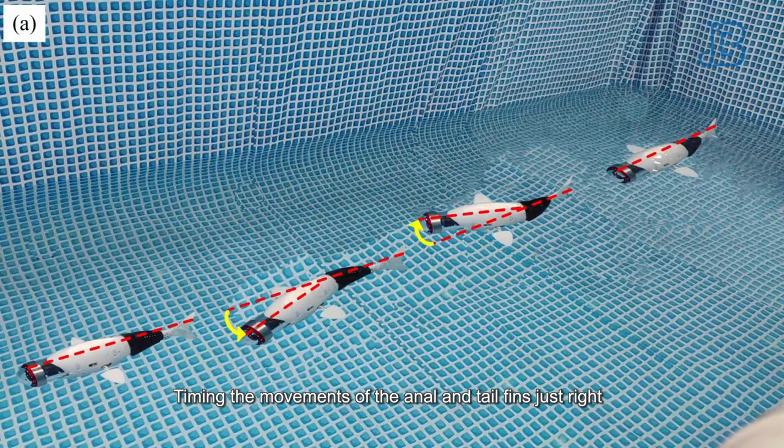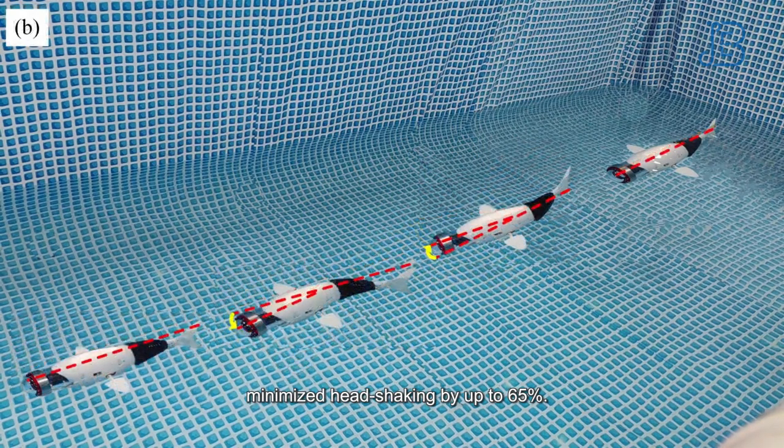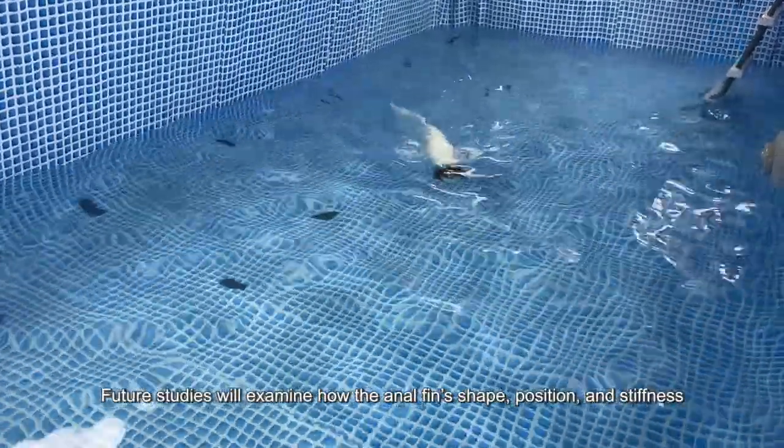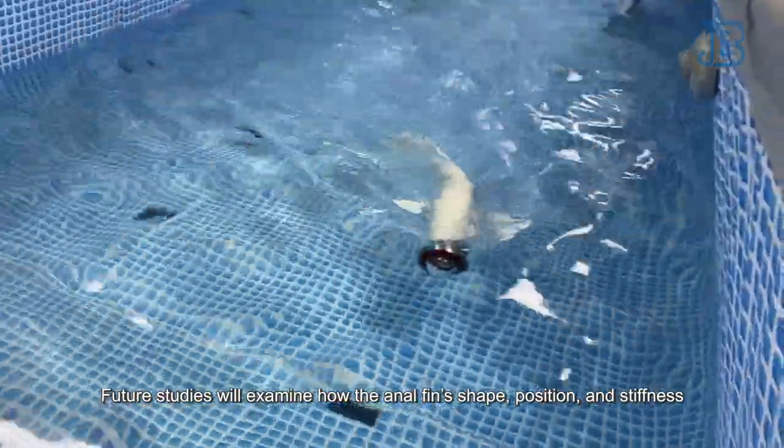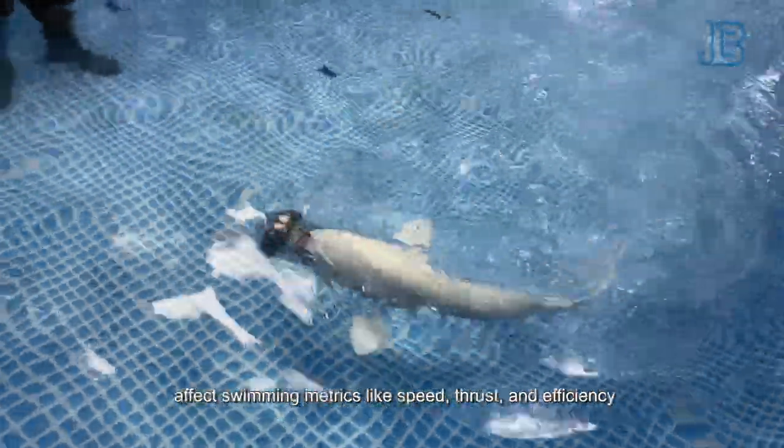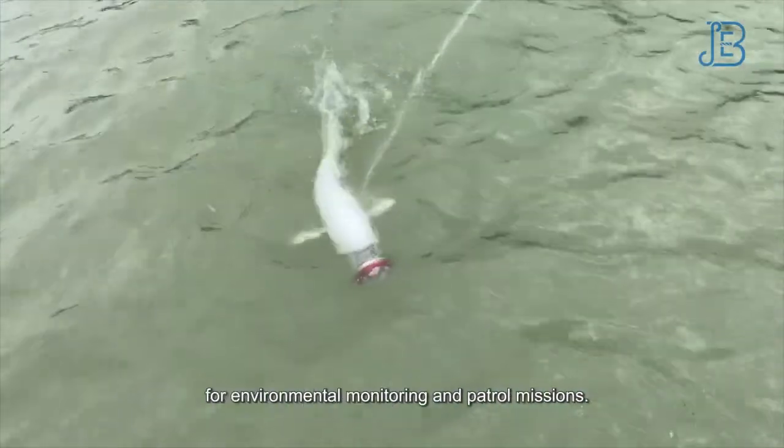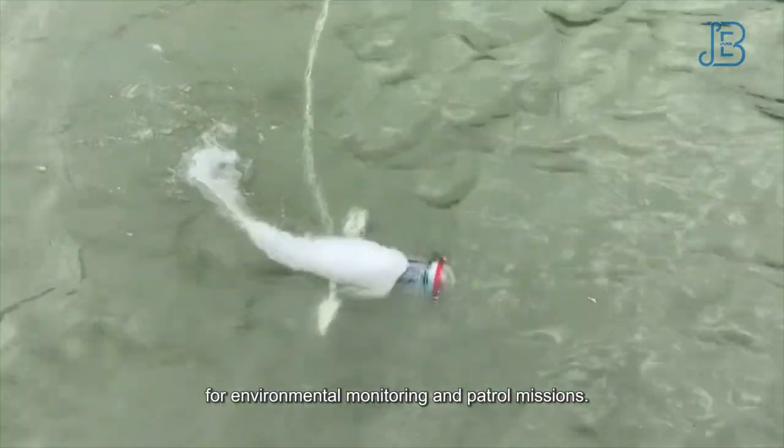Timing the movements of the anal and tail fins just right minimized head-shaking by up to 65%. Future studies will examine how the anal fin's shape, position, and stiffness affect swimming metrics like speed, thrust, and efficiency, and could lead to improved underwater robotics for environmental monitoring and patrol missions.